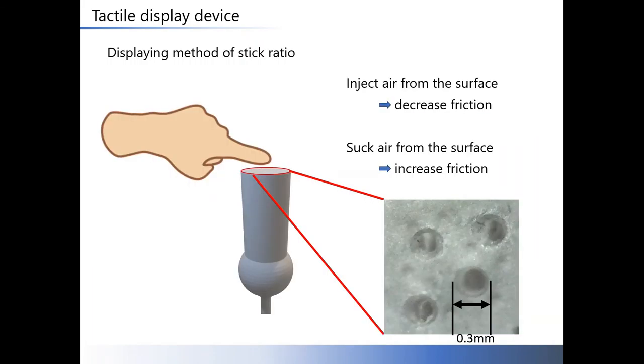This slide shows how to display the stick ratio. There are several small holes on surface. It gives a human finger a sense of slipperiness by jetting or sucking air from the display surface. The friction is decreased by injecting air. The friction is increased by sucking air.